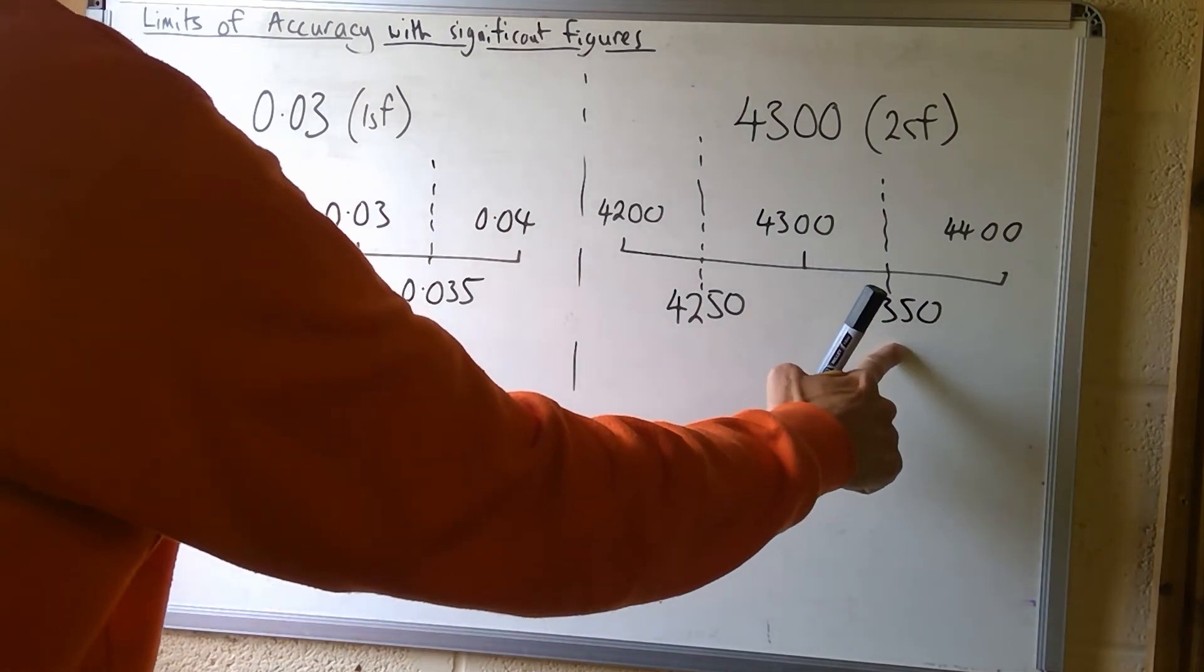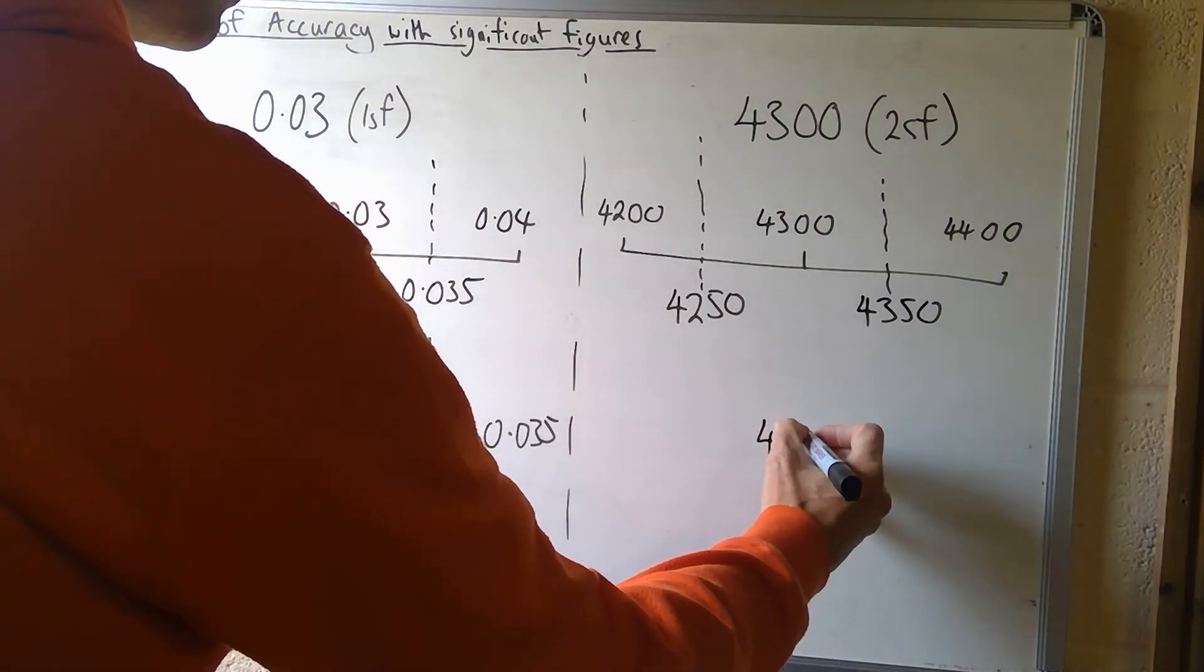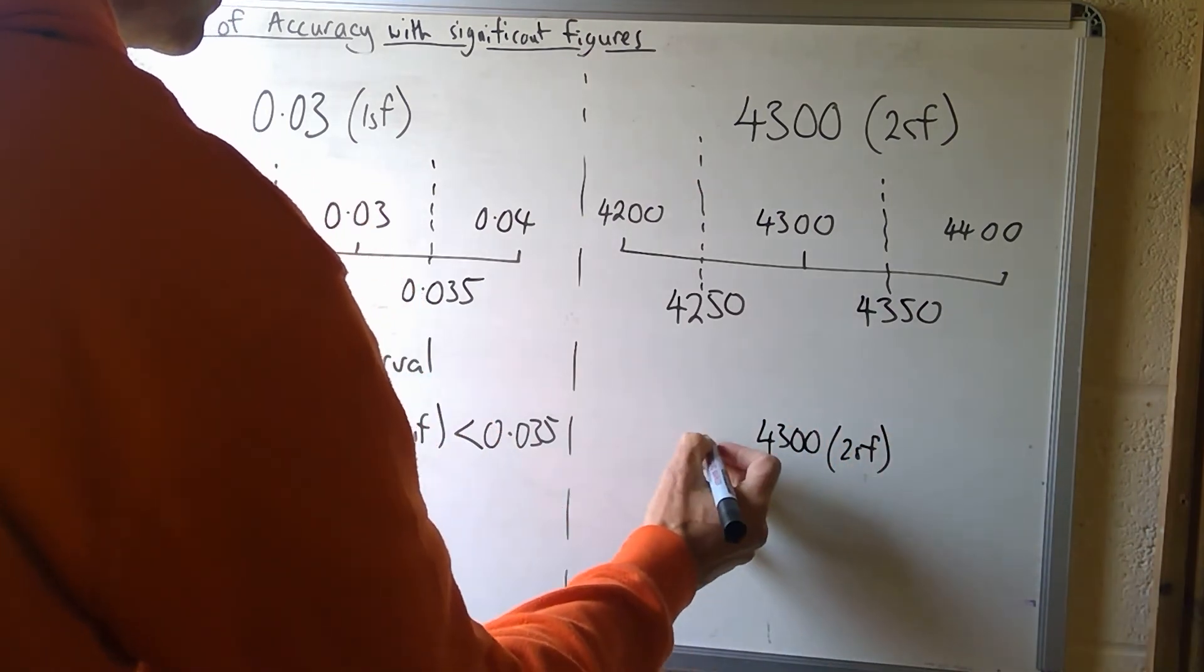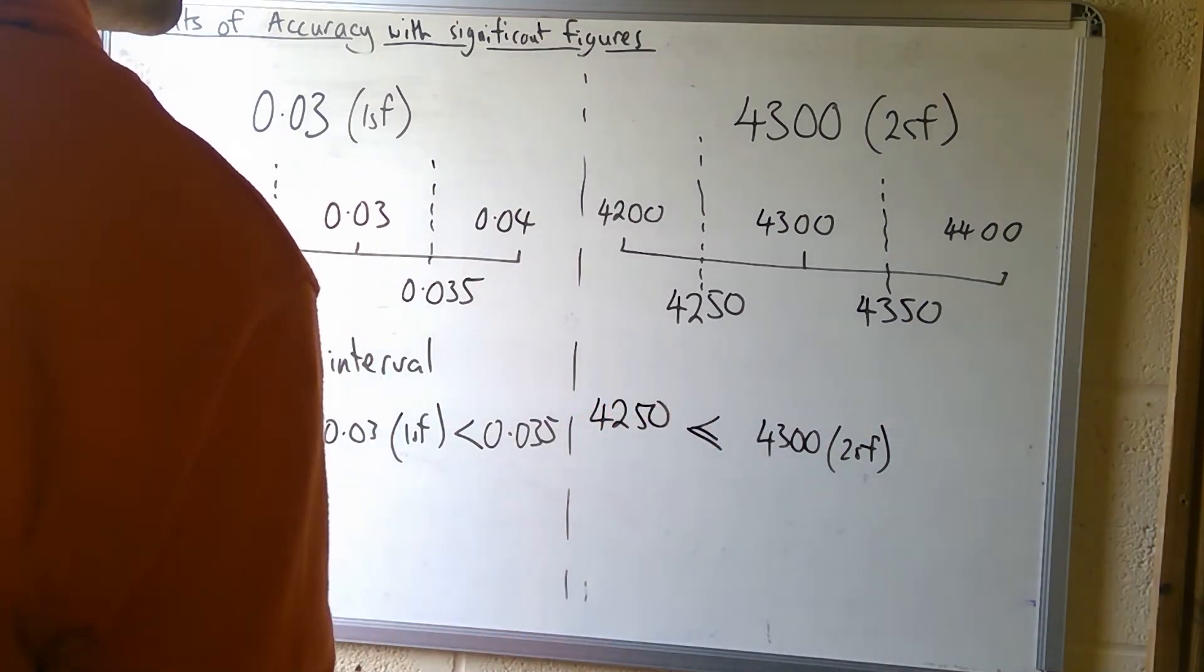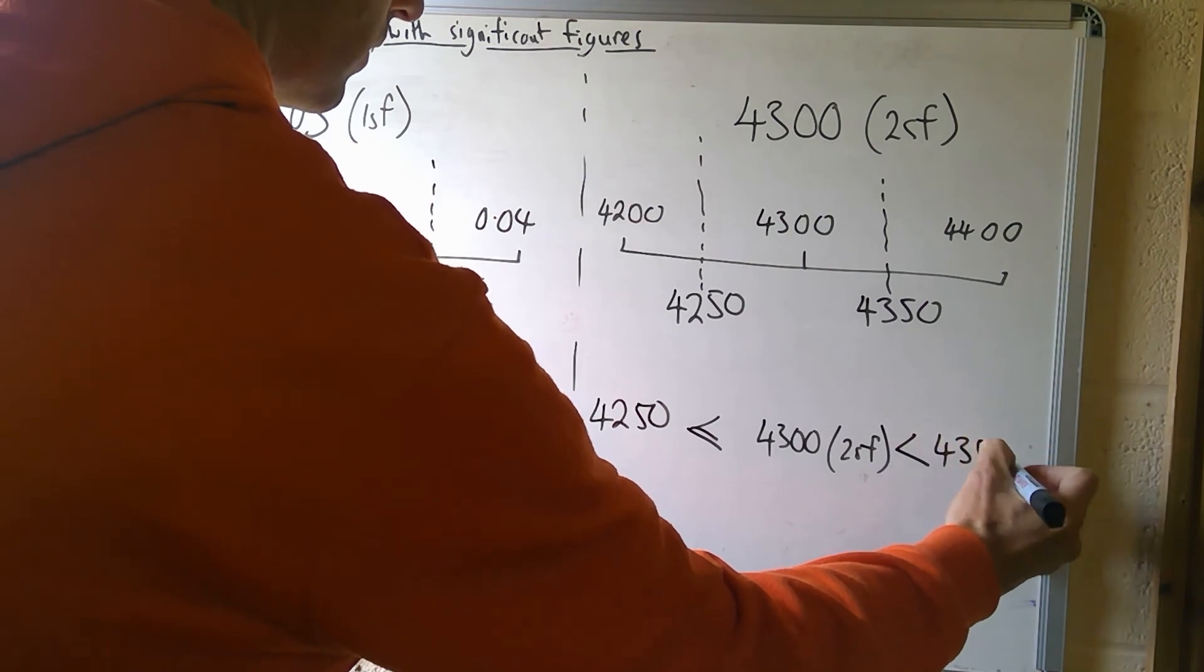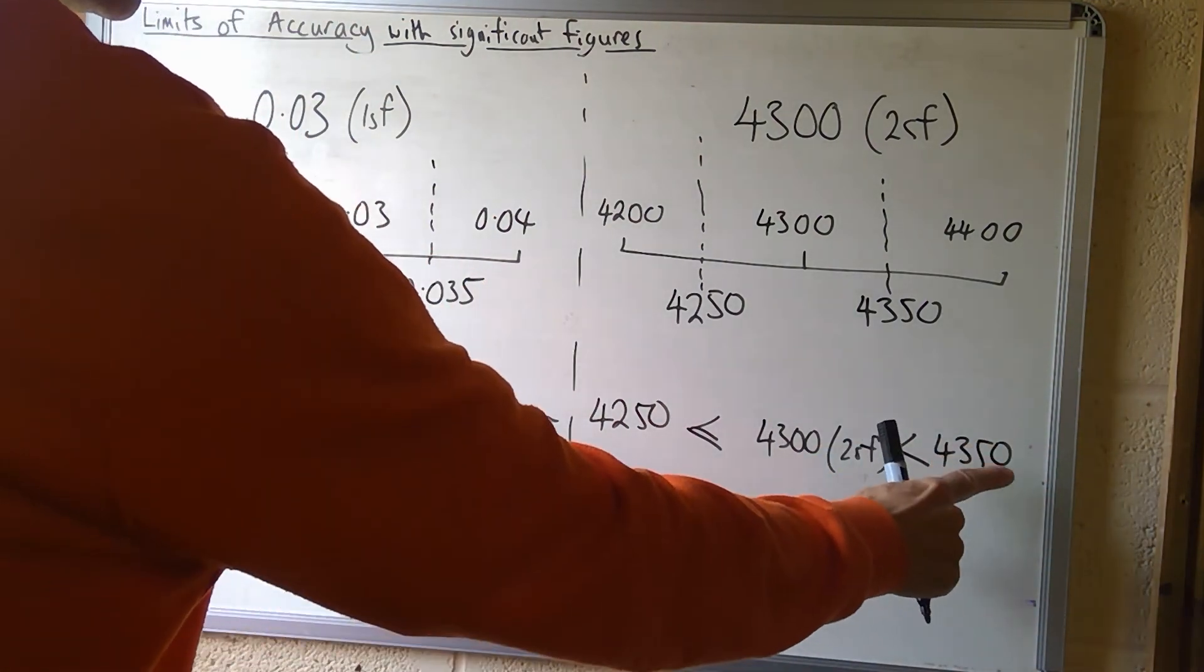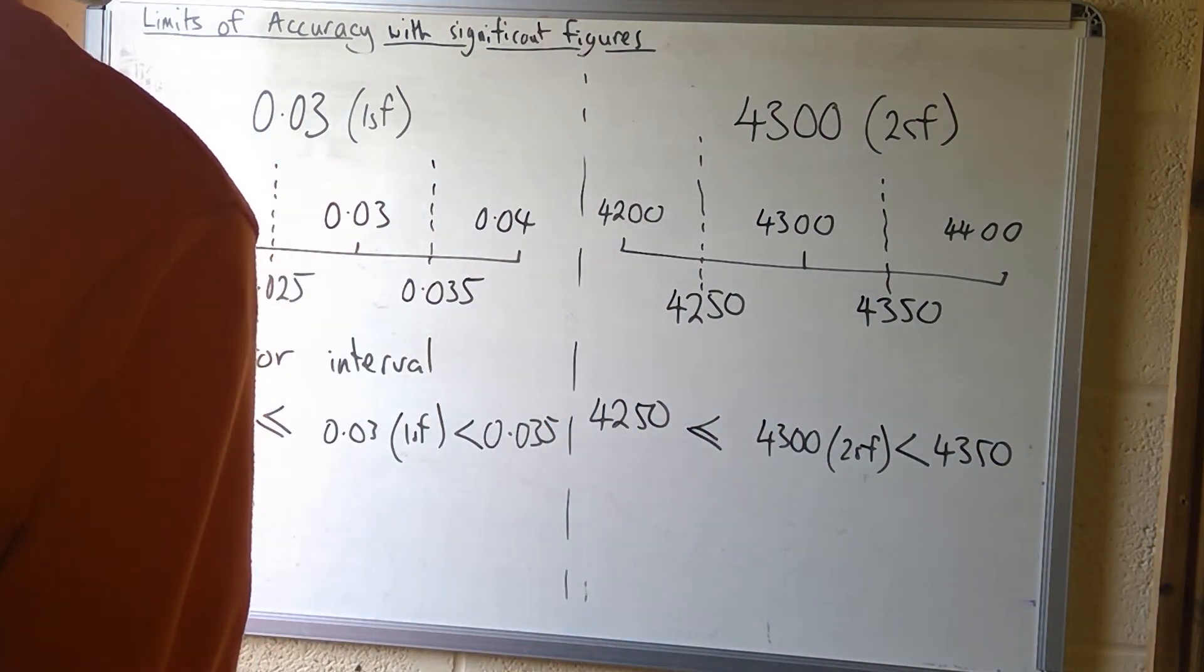Lower bound and upper bound: to write it as an error interval, 4,300 to two significant figures is greater than or equal to 4,250 and less than 4,350. Once again, the number's been rounded to two significant figures, while the upper and lower bounds have three significant figures.